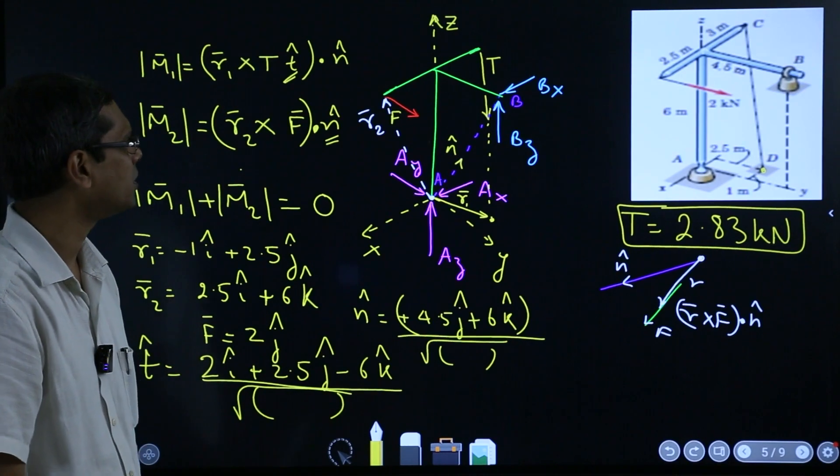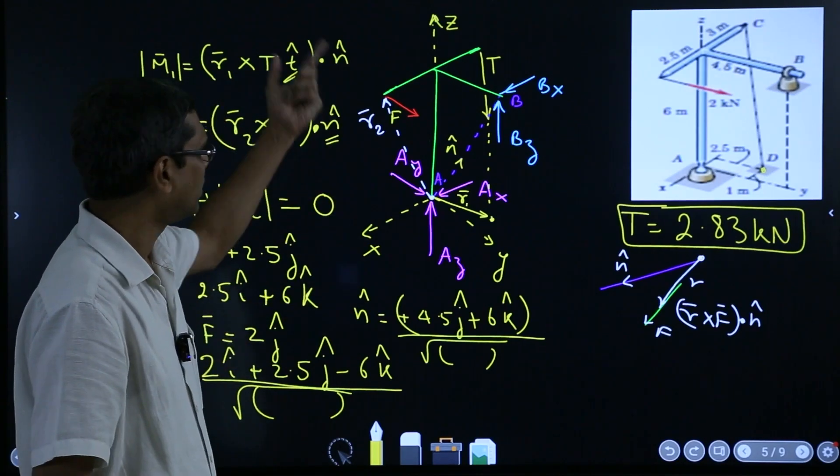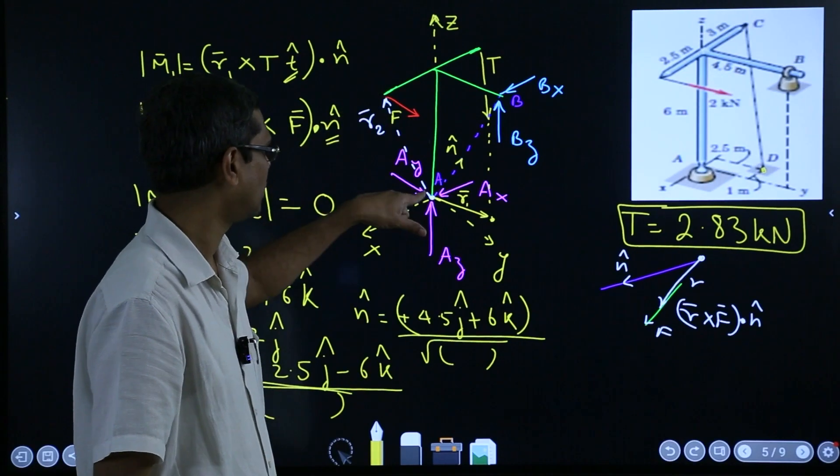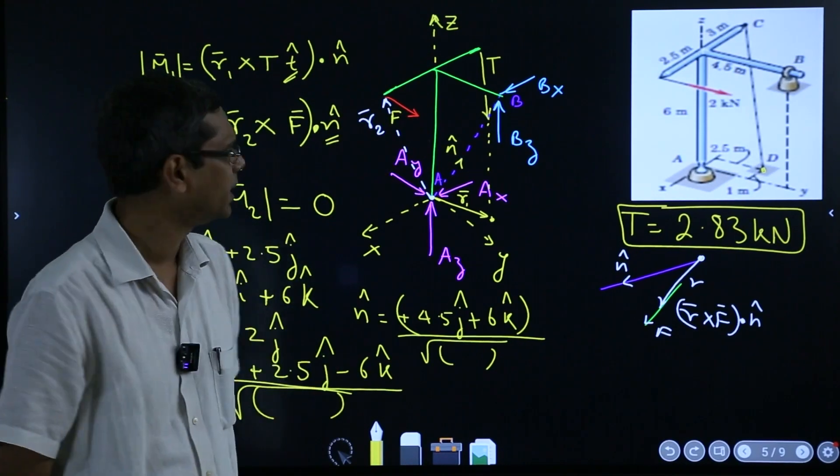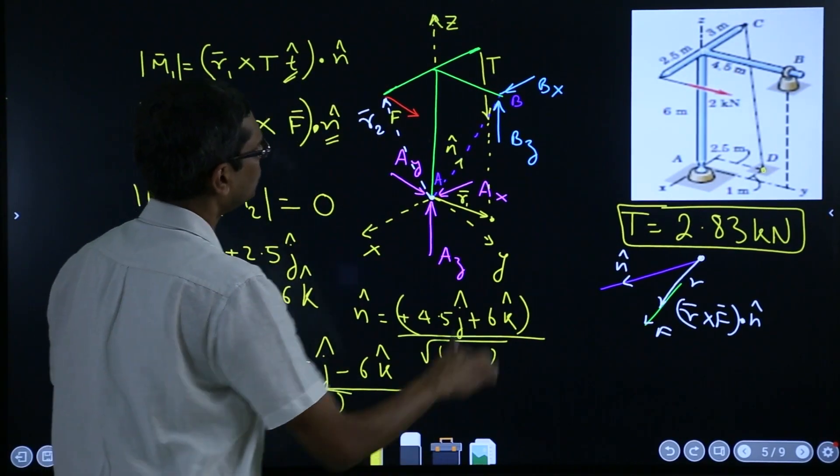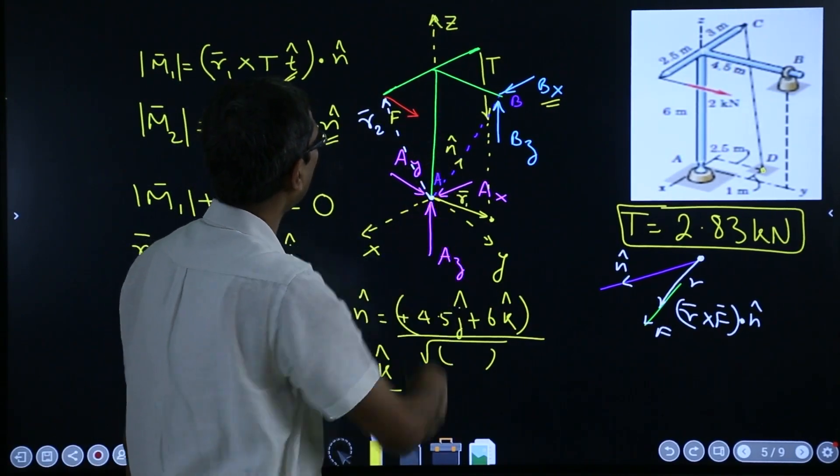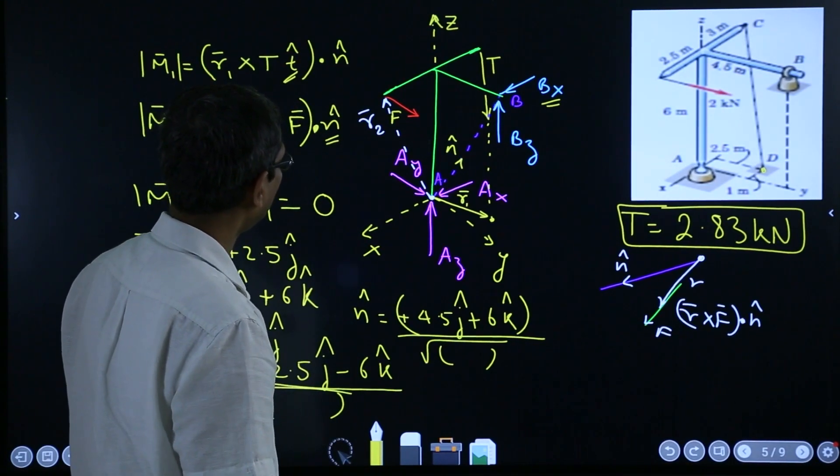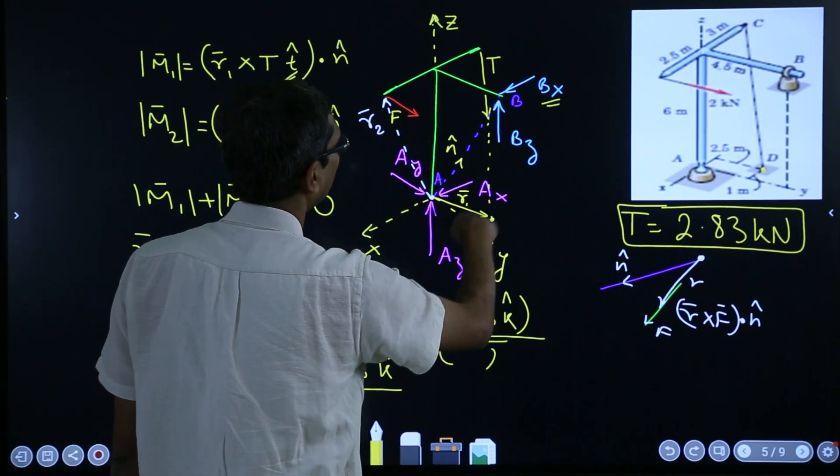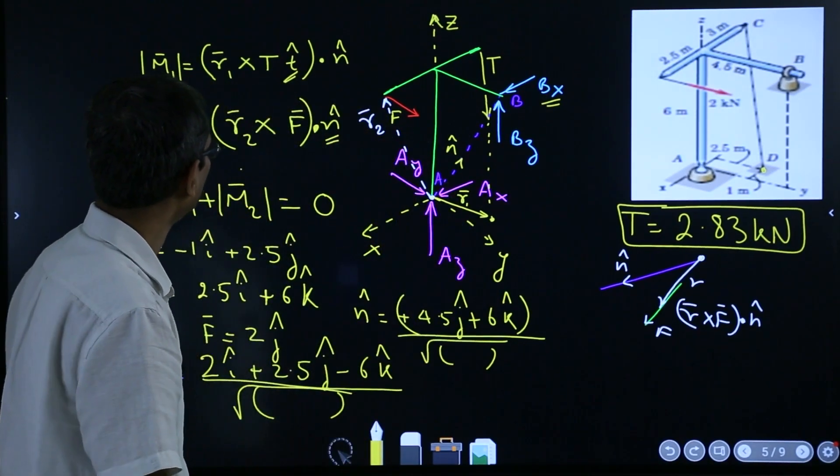And once you have figured that out, if you have to figure out the reaction forces, you can simply do that by taking about this point, about A point. Or best thing is, suppose you want to find out Bx. Now, think that you are taking a moment about this axis, say Z axis. So all other things will just vanish. So then you have only Bx and F. And you are done.